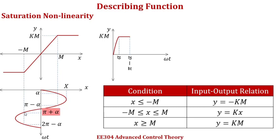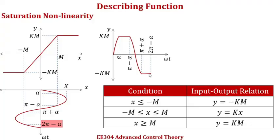The third portion is the range from pi minus alpha to pi plus alpha — here the output is again proportional to the input, so the output waveform follows the shape of a sine wave. The next portion is from pi plus alpha to 2pi minus alpha, where the amplitude is less than minus m and as such it gets clipped at minus km, giving a flat response. The last section, from 2pi minus alpha to 2pi, comes back into the linear region from minus m to 0, and the output waveform again takes the shape of a sinusoidal signal.